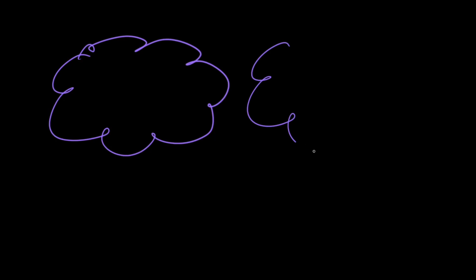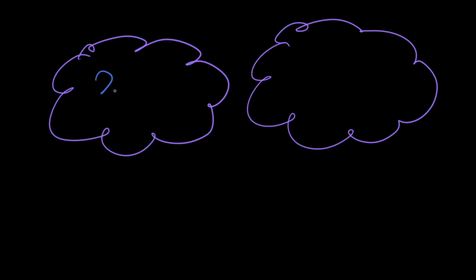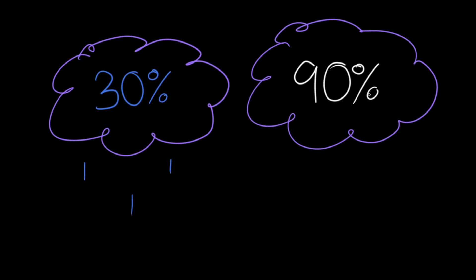That's why you'll always hear probabilistic weather predictions, providing a percentage that refers to how confident the model is that the prediction will happen. If your local weather forecast says there's a 30% chance of rain, it's less likely but still possible that you're going to get rain. If it says there's a 90% chance of snow on another day, you're most likely going to get snow.